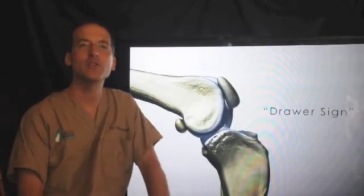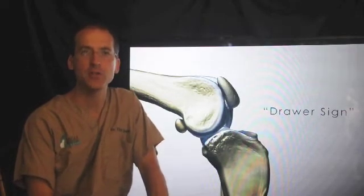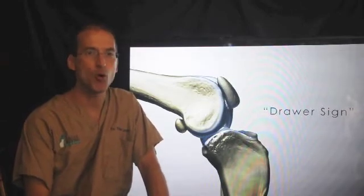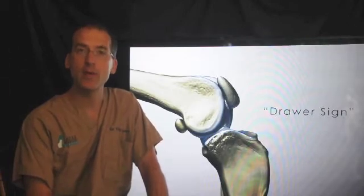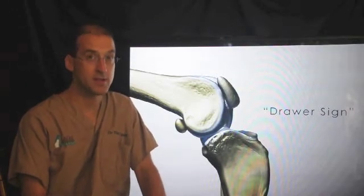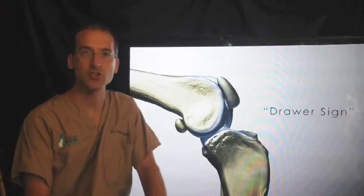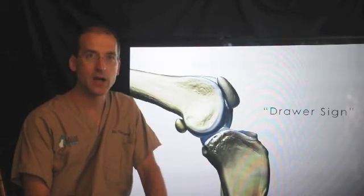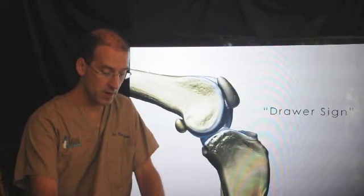Now I'm going to talk about a surgical repair technique that has several names. We call it the extracapsular repair. It's also known as the modified Flo technique, or the old-fashioned technique. It's been around for about 40 years and is still used quite a bit these days. It's a technique we use primarily in smaller breed dogs and cats, but we will use it occasionally in larger breeds, especially for financial concerns. It is a bit less expensive than some other techniques. So let me go through the procedure and talk about the aftercare and complications.